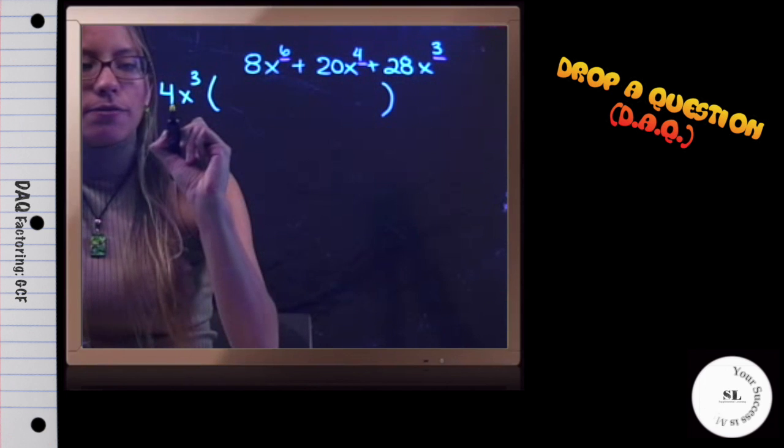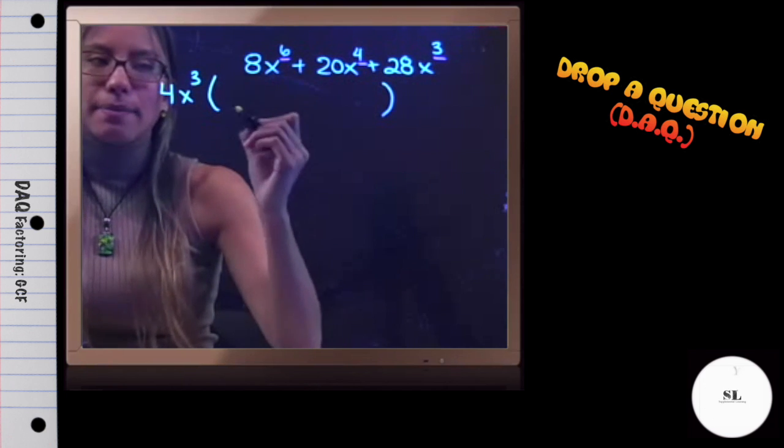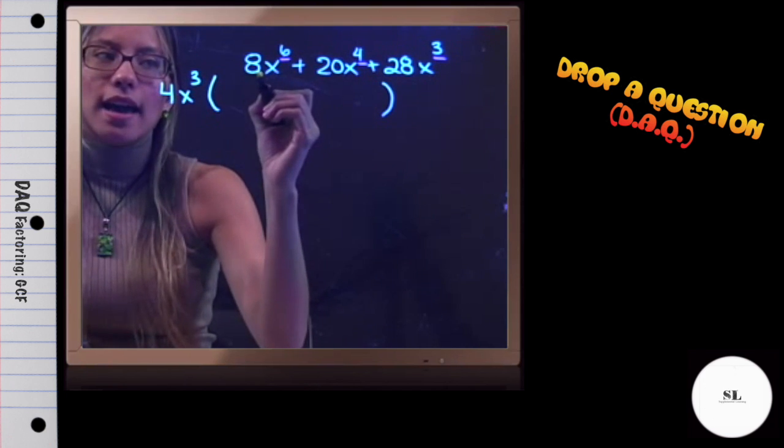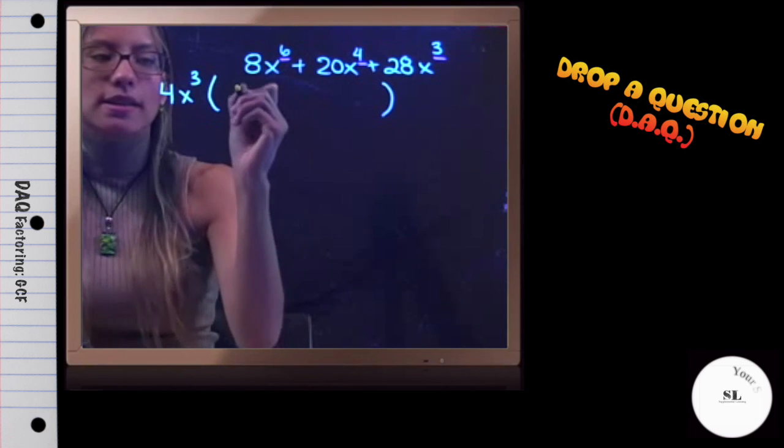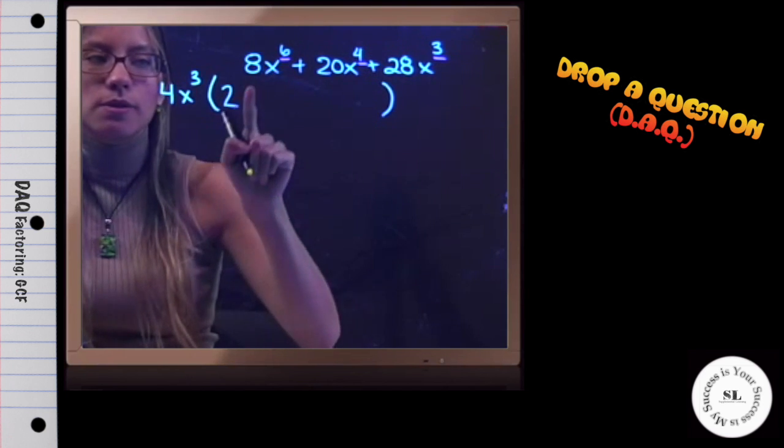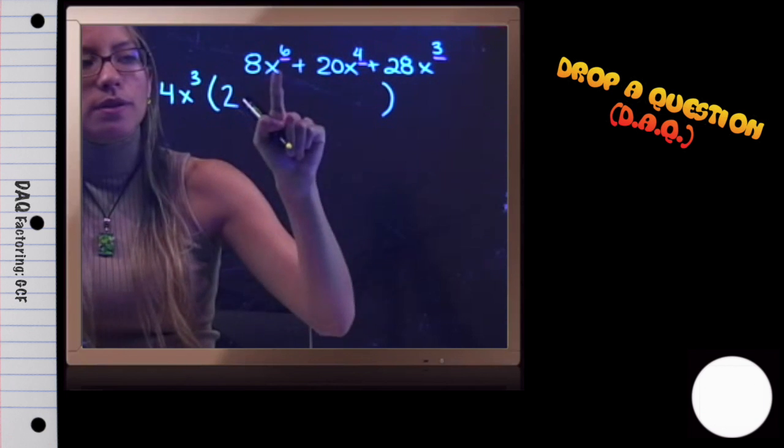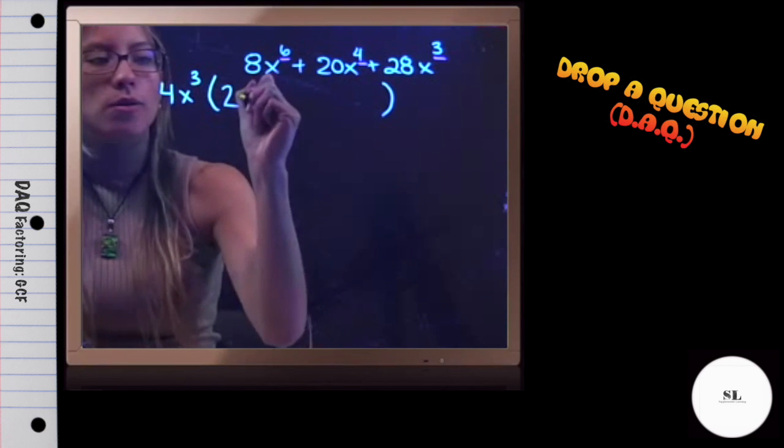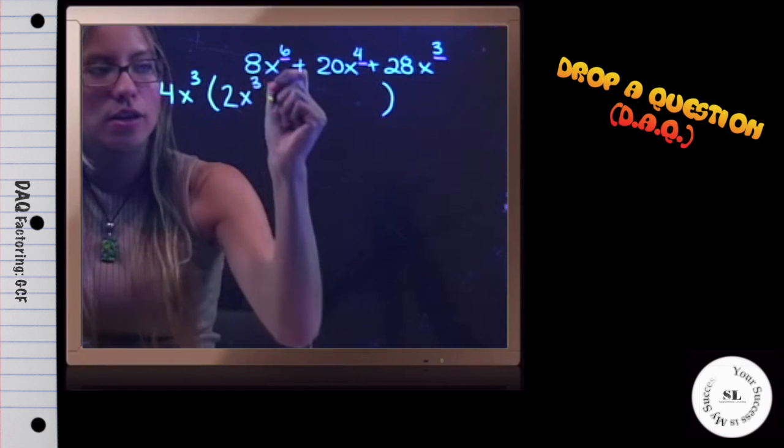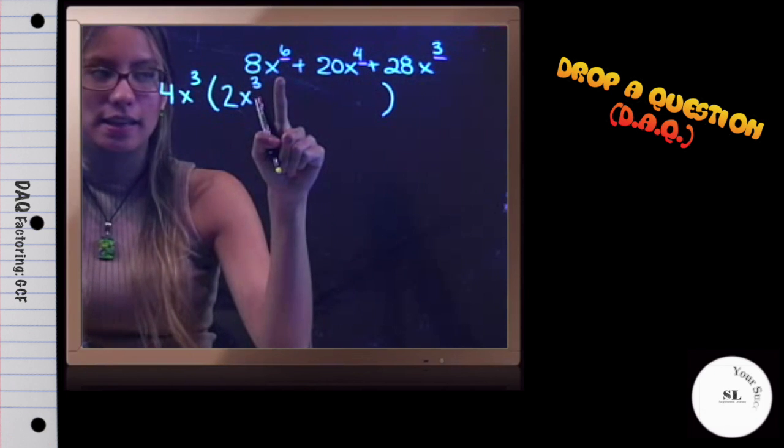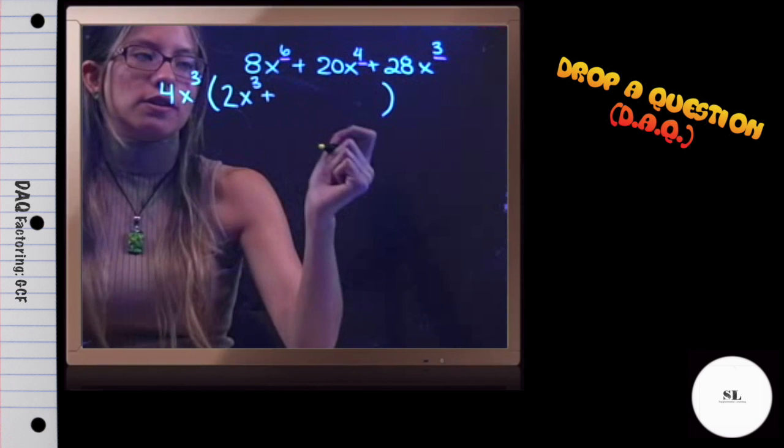Another way to think about it is: 4x^3 multiplied by what will give you back 8x^6? In this case, it would be 2, right? 4 times 2 gives us 8. Then for the variables, x^3 times x^3 gives us back x^6. And that would be for the first term.